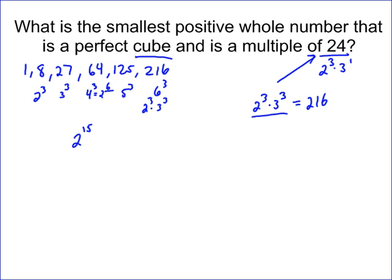So 216, which is 6 cubed. We already know that's a perfect cube from here. But 216 is a perfect cube that is also a multiple of 24. 24 times what gives you 216? The answer is 9. 24 times 9 gives you 216, which shows that it's a multiple.